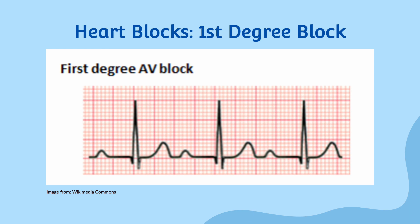The underlying etiology of first degree heart block can be related to aging, as the conduction system of the heart can deteriorate with age. Certain medications, such as beta blockers or calcium channel blockers, can also cause first degree heart block. It can also be seen in underlying medical conditions such as cardiomyopathy, where the heart muscle becomes enlarged or thickened, affecting the electrical conduction system.